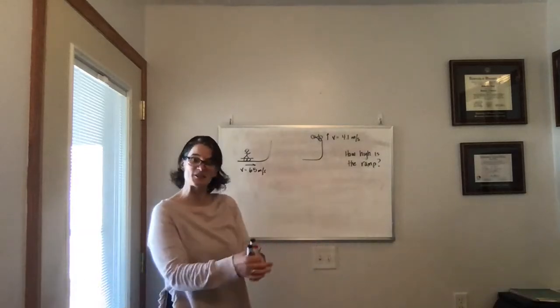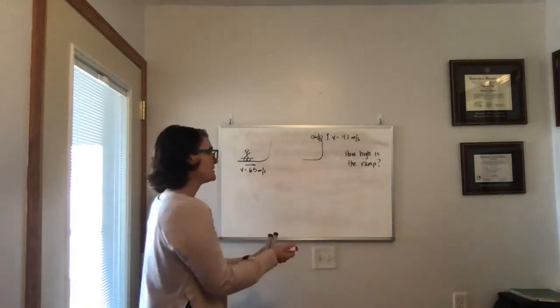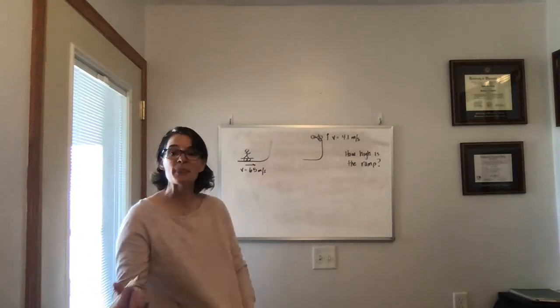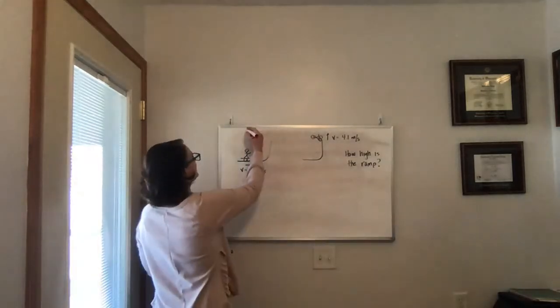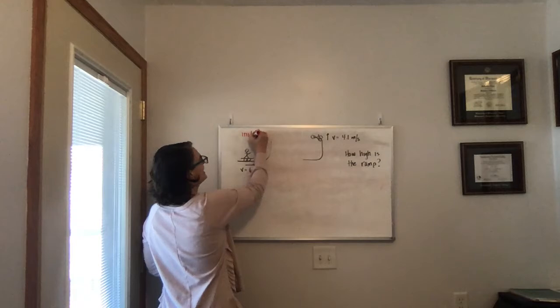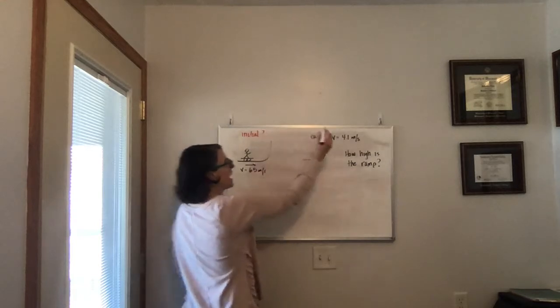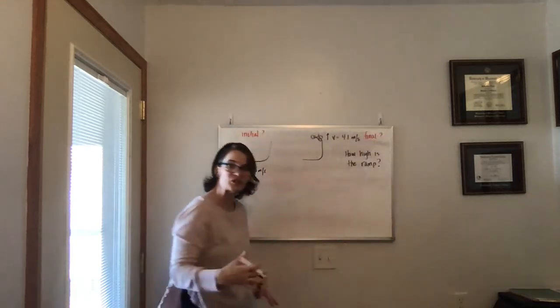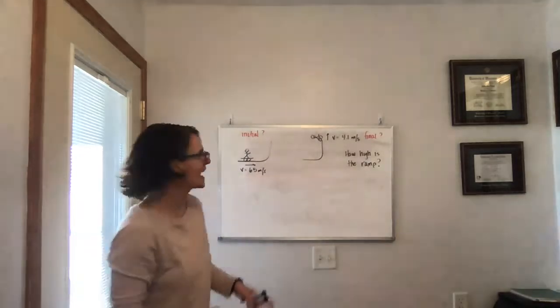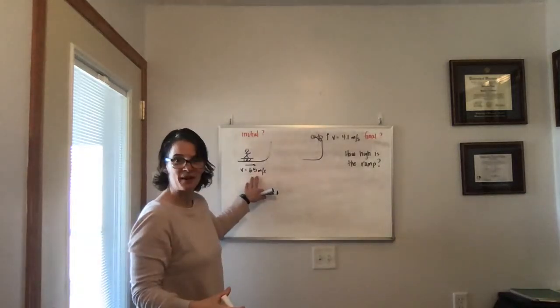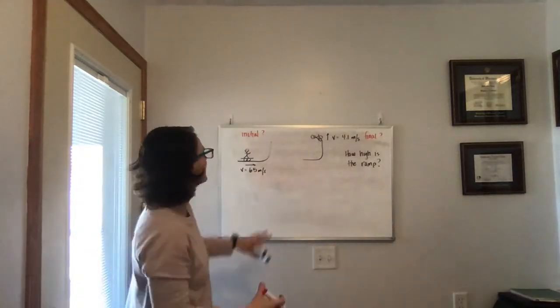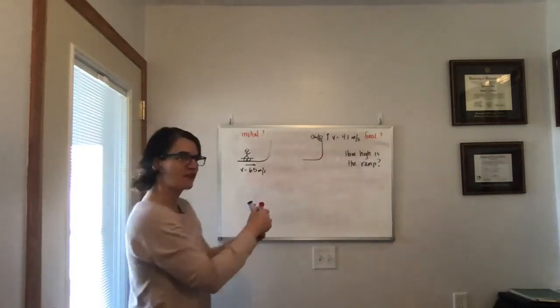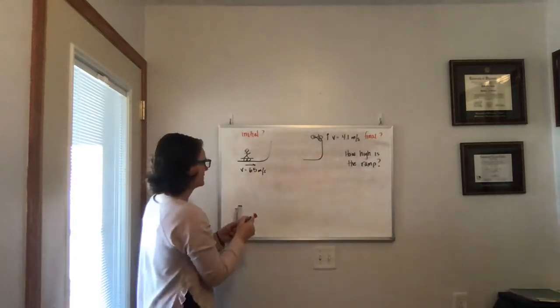Alright, we can look at this in terms of conservation of energy. So we explored how to solve a conservation of energy problem. We talked about looking at when is the initial, and when is the final. And so the initial, the first time point we're going to be looking at is when she goes into the ramp. And the second time we're going to be looking at is when she leaves the ramp. Alright, so those are our initial and final time points.